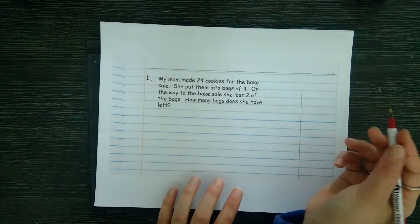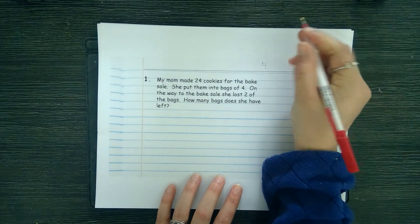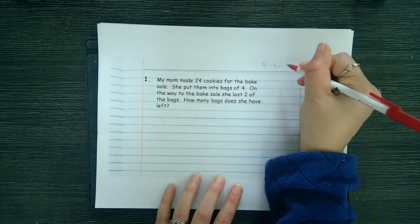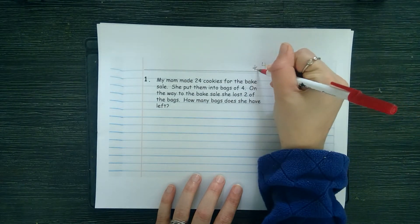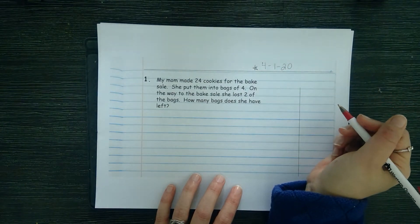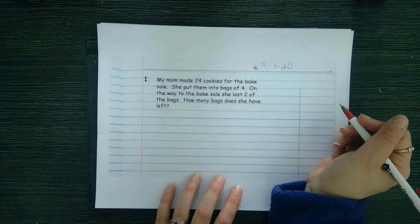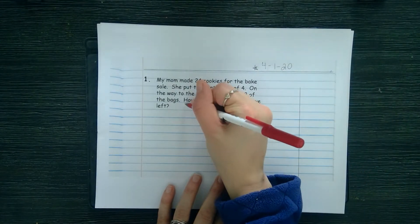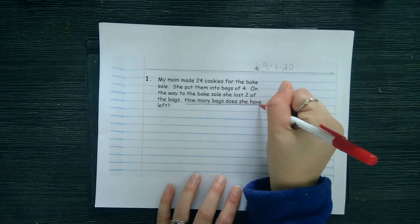The very first thing we do when we're solving a problem is we write the date. Give yourself a star if you wrote the date at the top. Next, we need to underline the problem. What is the problem that we're solving? We are trying to find out how many bags she has left.